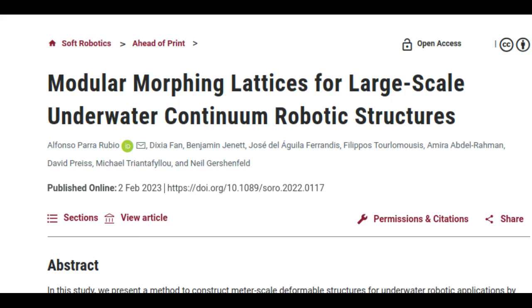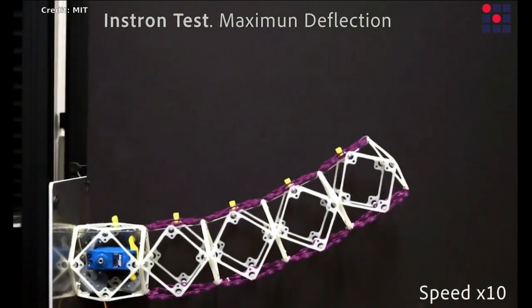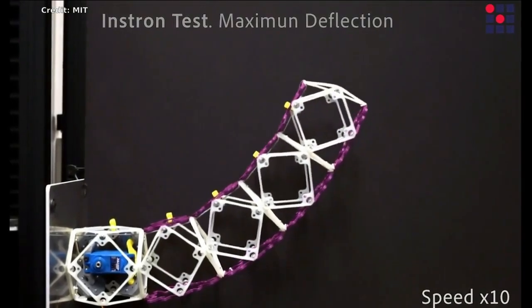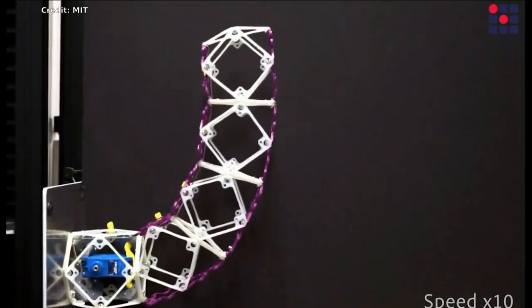Existing approaches to soft robotics for marine applications are generally made on small scales, while many useful real-world applications require devices on scales of meters. The new modular system the researchers propose could easily be extended to such sizes and beyond, without requiring the kind of retooling and redesign that would be needed to scale up current systems.